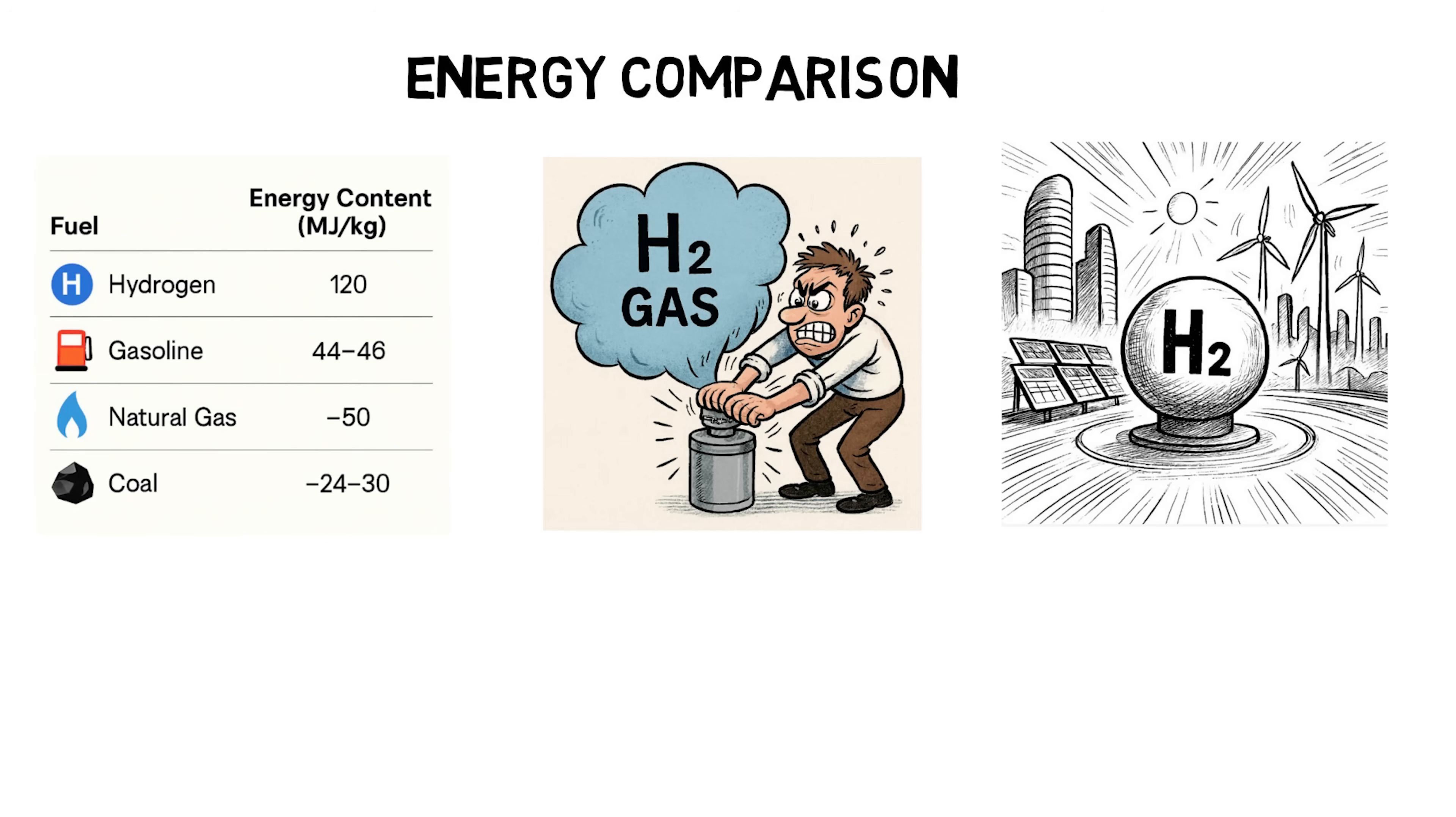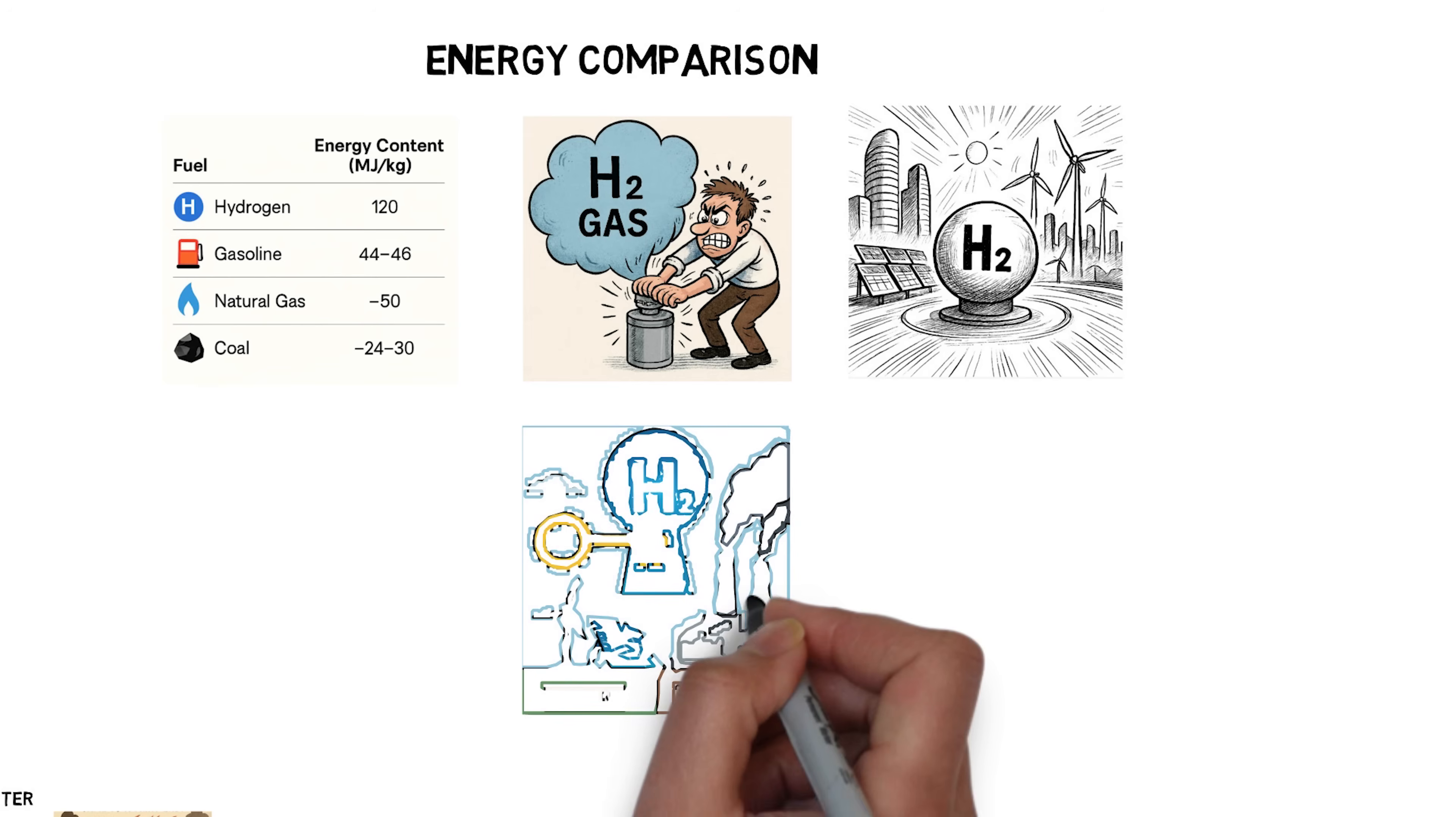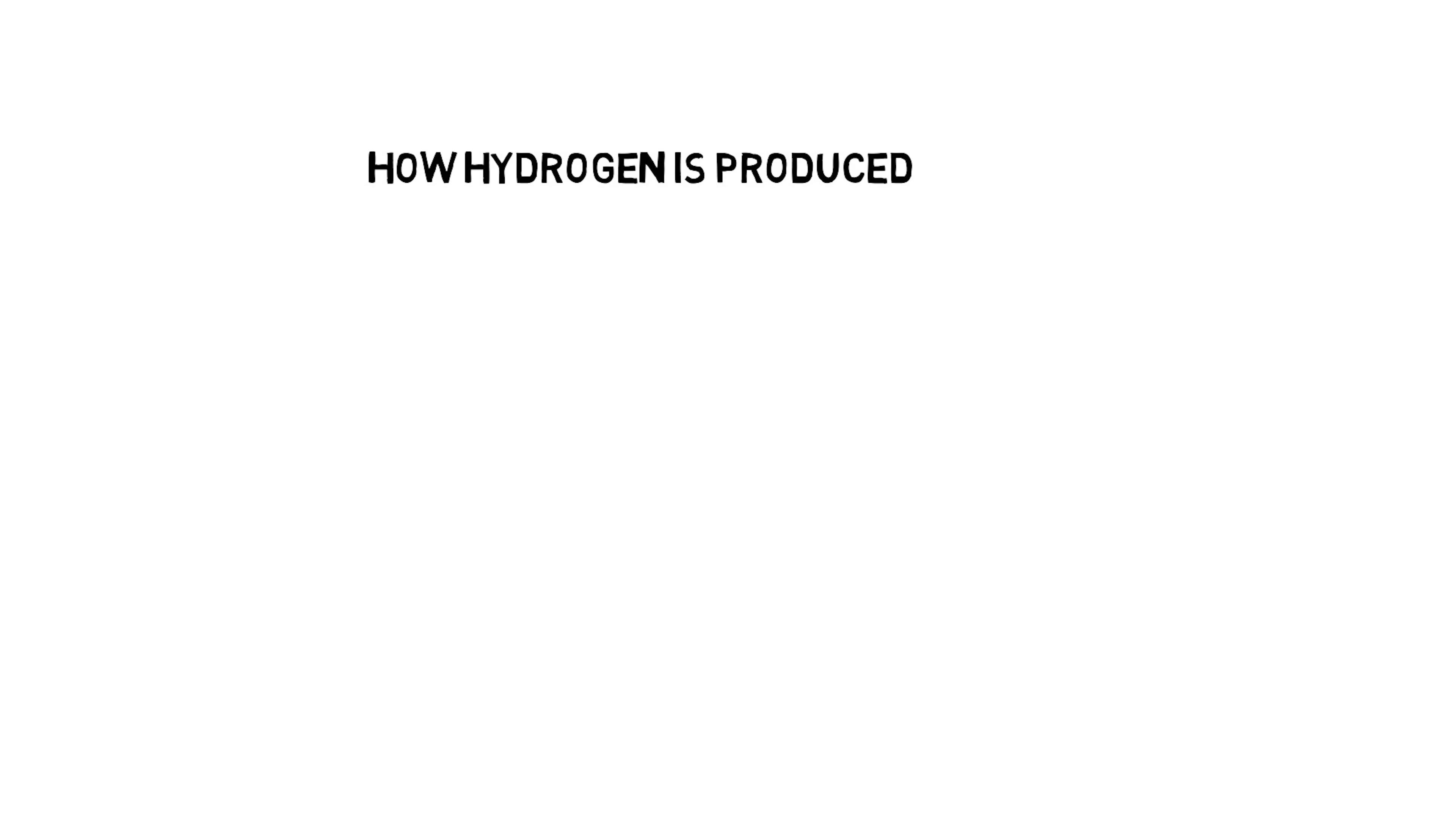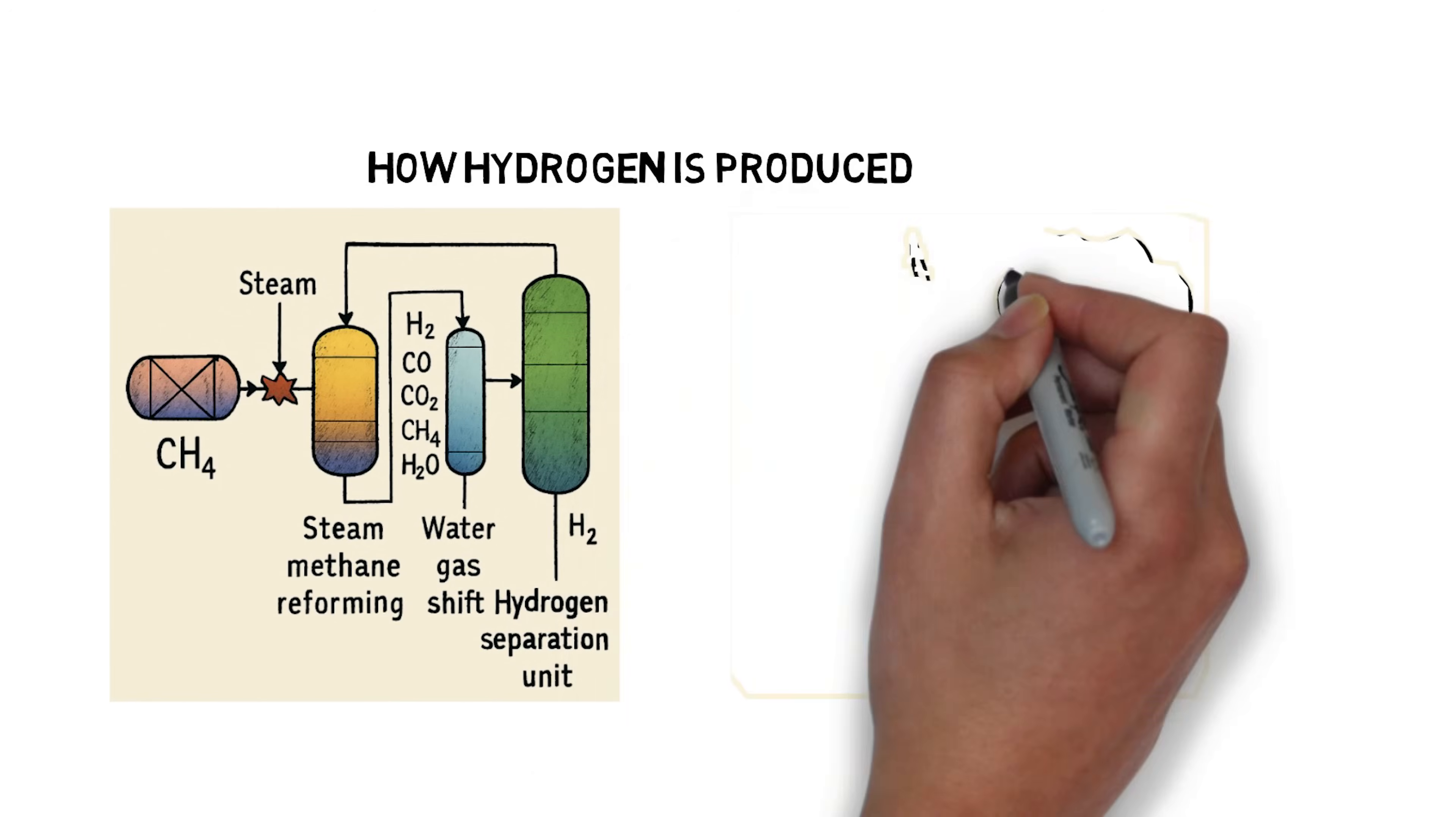Hydrogen's energy potential is extraordinary. But unlocking that potential depends on how we produce it, cleanly or not. Today, most hydrogen is made from natural gas through steam methane reforming, a carbon-heavy process. But electrolysis, powered by renewables, offers a cleaner alternative.